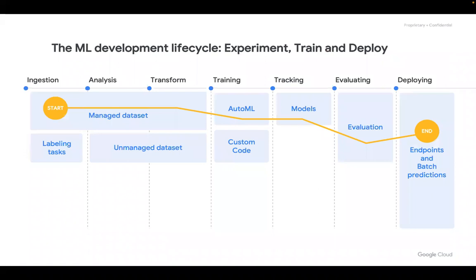This is the overall ML development life cycle. We'll break it into two parts and see how Vertex AI performs in each. It starts with data ingestion, analysis, and transformation — data pre-processing. If data is labeled, fine; if not, we perform labeling. Sometimes it's unmanaged data requiring cleaning and transformation activities. That is the first phase.